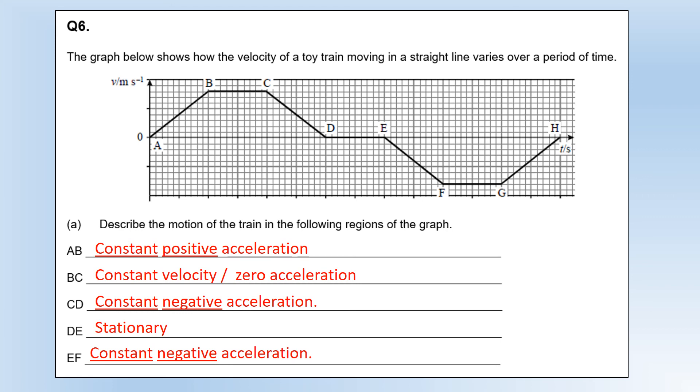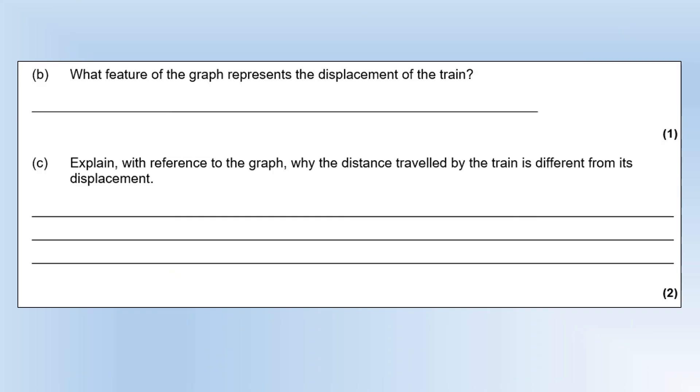What feature of the graph represents the displacement? Well, it was a velocity-time graph, so the area underneath the graph, or the area between the graph and the x-axis, is the displacement of the train.